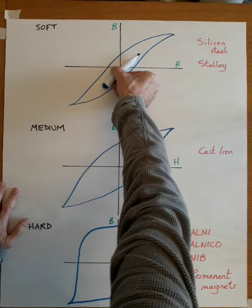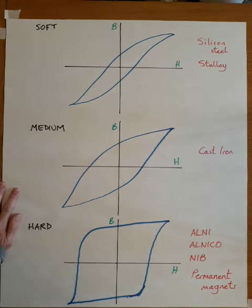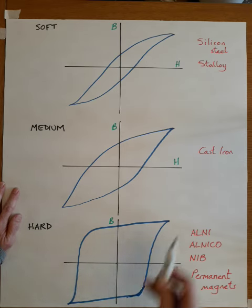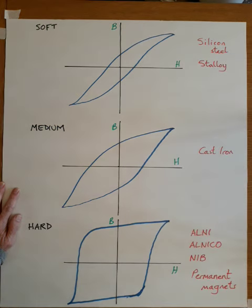A narrow curve tends to refer to a soft magnetic material, something which is very easy to magnetize and demagnetize and then remagnetize with opposite polarity. That would be typical of silicon steel and stalloy that would be used in things like laminations for rotors in motors and for transformers.